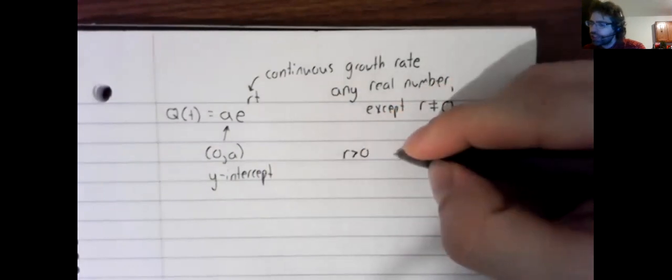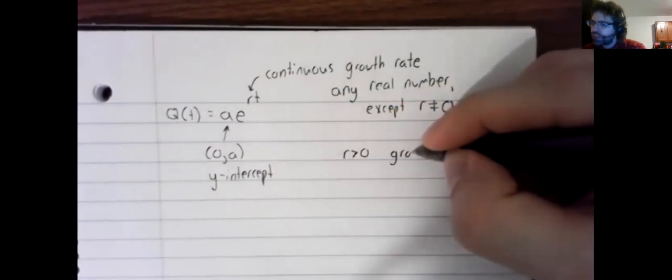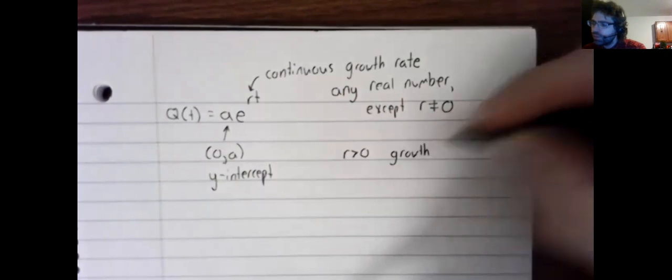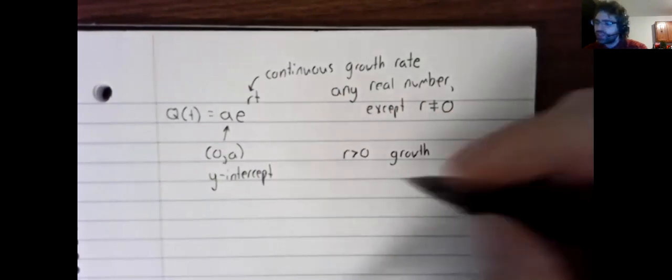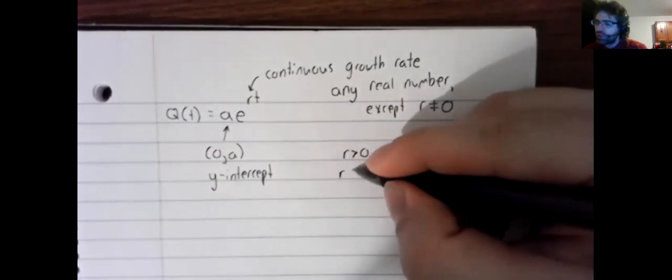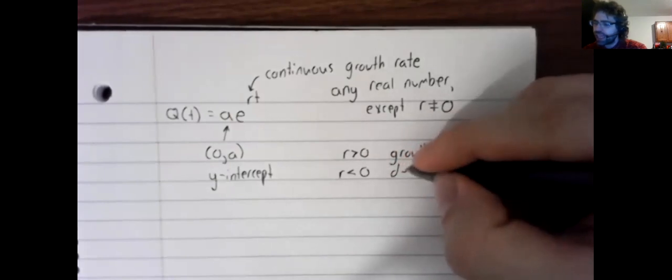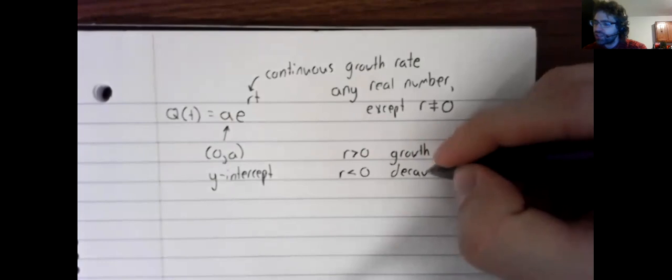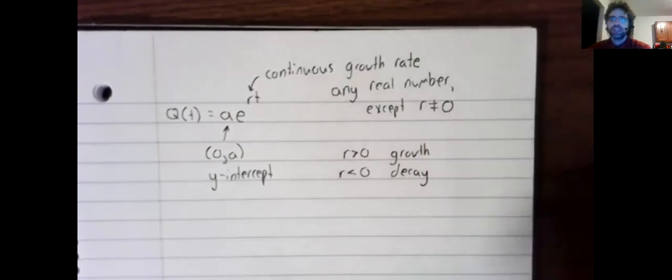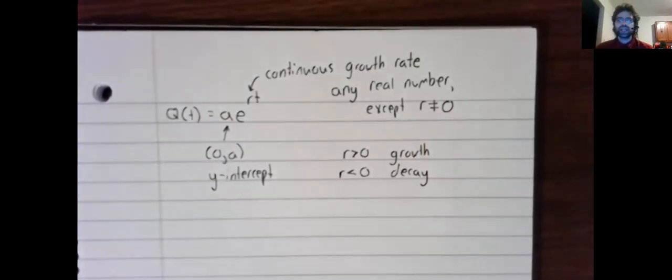If r is greater than zero, that represents exponential growth. If r is less than zero, that represents exponential decay.